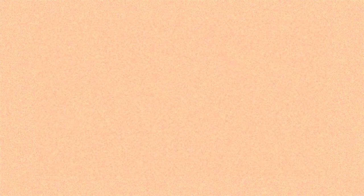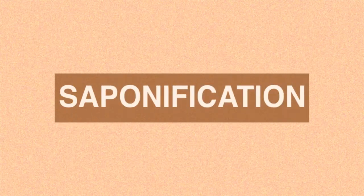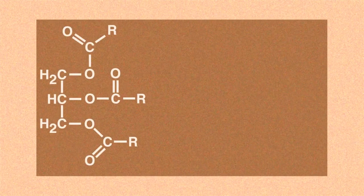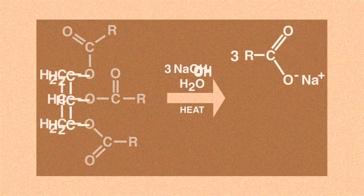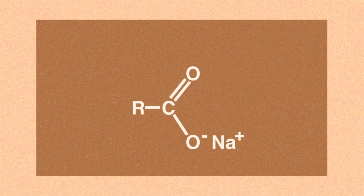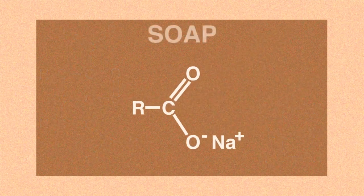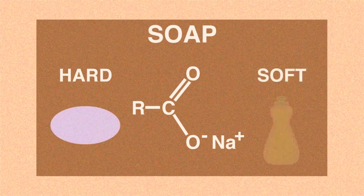In summary, soaps are made by a process called saponification. This is a hydrolysis reaction whereby a fatty acid ester bond is broken and a carboxylate salt and glycerine are formed. That carboxylate salt is the soap that we use when we wash, and can be hard, as in a bar of soap, or soft, like that found in a hand wash.